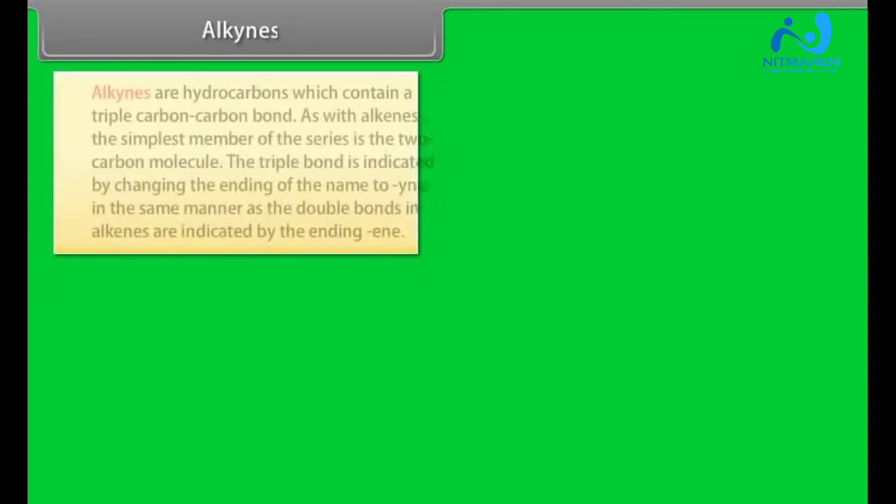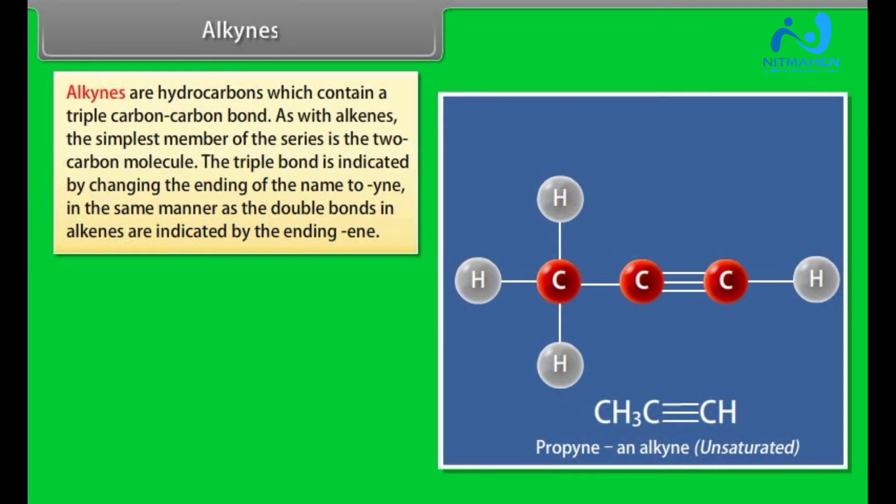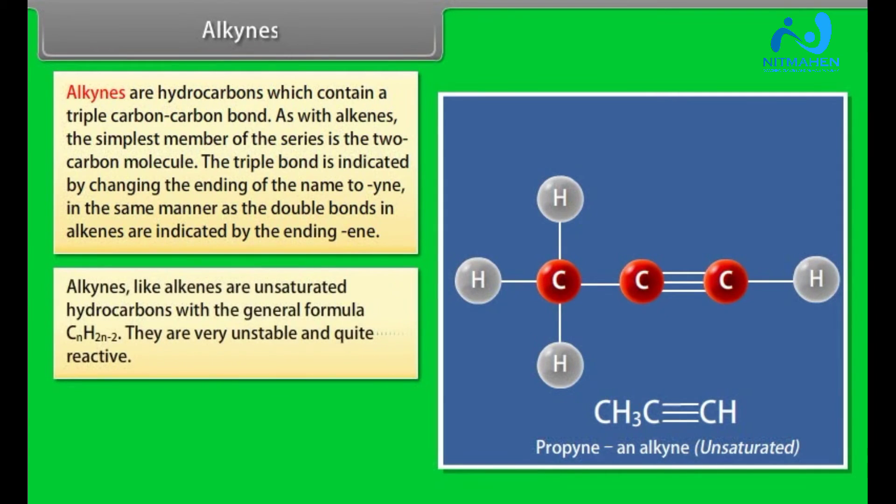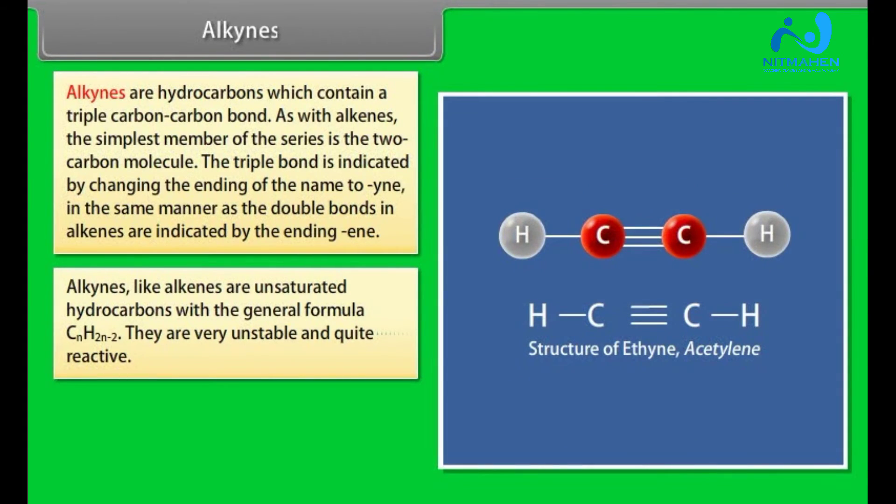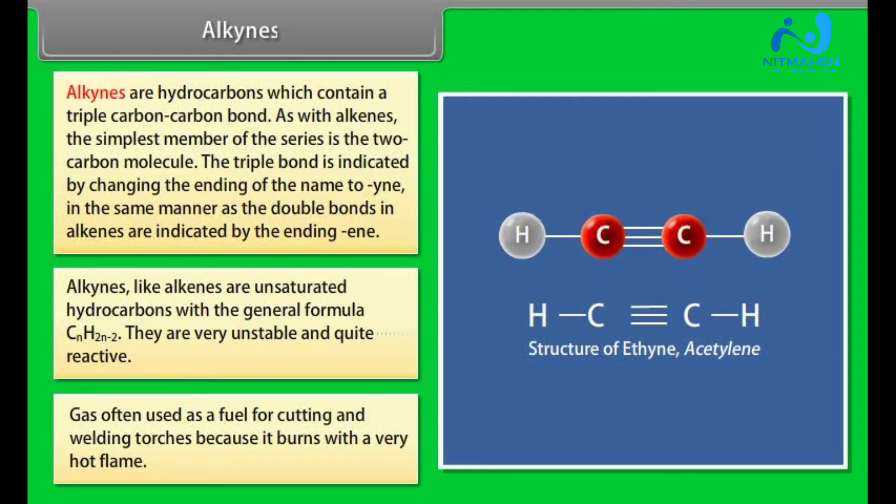Alkynes. Alkynes are hydrocarbons which contain a triple carbon-carbon bond. As with alkenes, the simplest member of the series is two-carbon molecule. The triple bond is indicated by changing the ending of the name to -yne in the same manner as the double bonds in alkenes are indicated by the ending -ene. Alkynes, like alkenes, are unsaturated hydrocarbons with the general formula CnH2n-2. They are very unstable and quite reactive. For example, ethyne, the simplest alkyne, which is more commonly known by its common name acetylene, is a gas often used as a fuel for cutting and welding torches because it burns with a very hot flame.